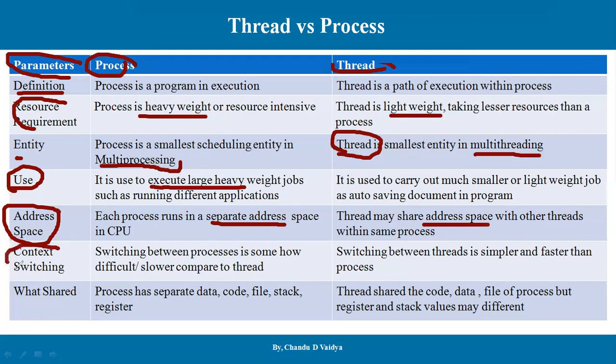Talking about context switching, context switching between processes is somehow difficult and slower compared to threads, because a lot of resources are involved and it takes more time. Whereas context switching between threads is simpler and faster compared to processes. The code section is common in threads, and only the stack and register values need to be switched, so the context switching cost and time are reduced.